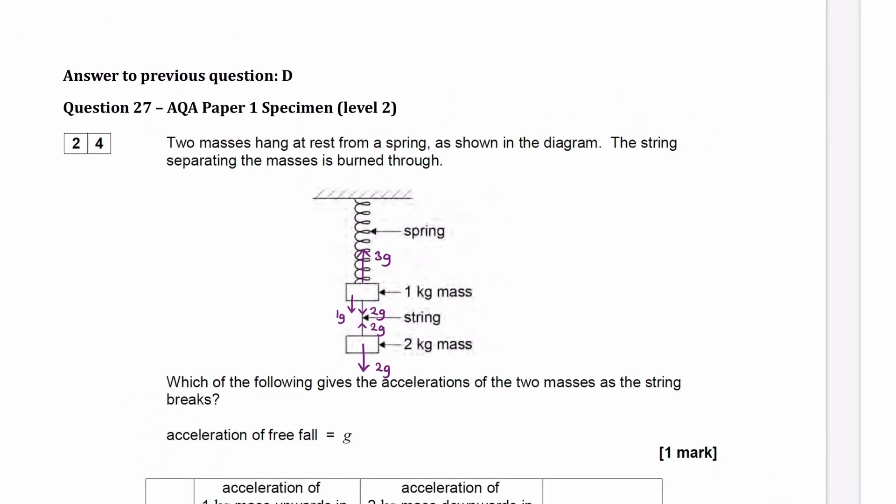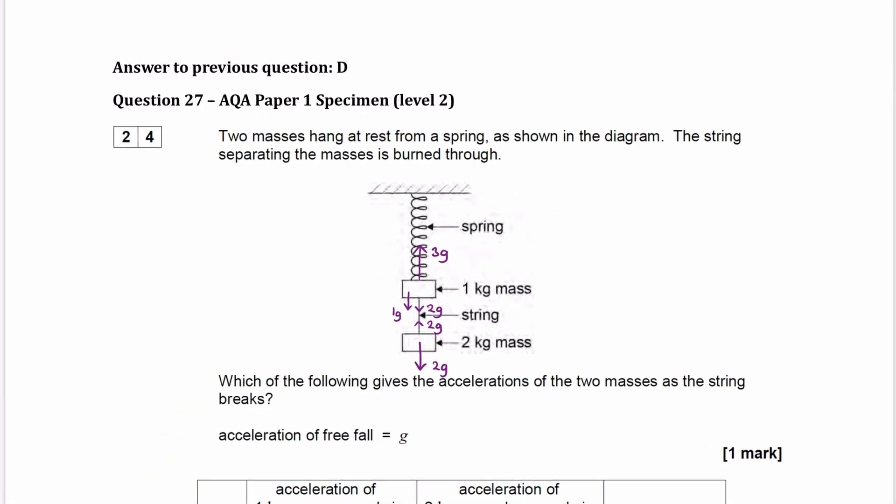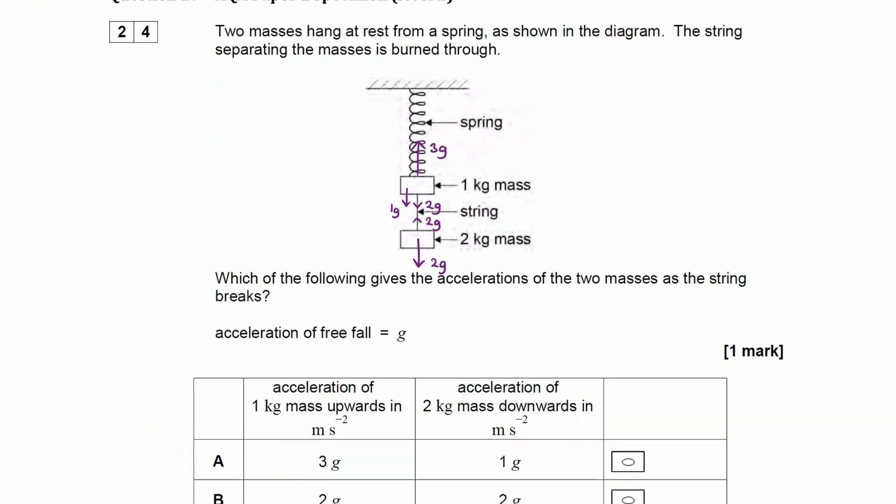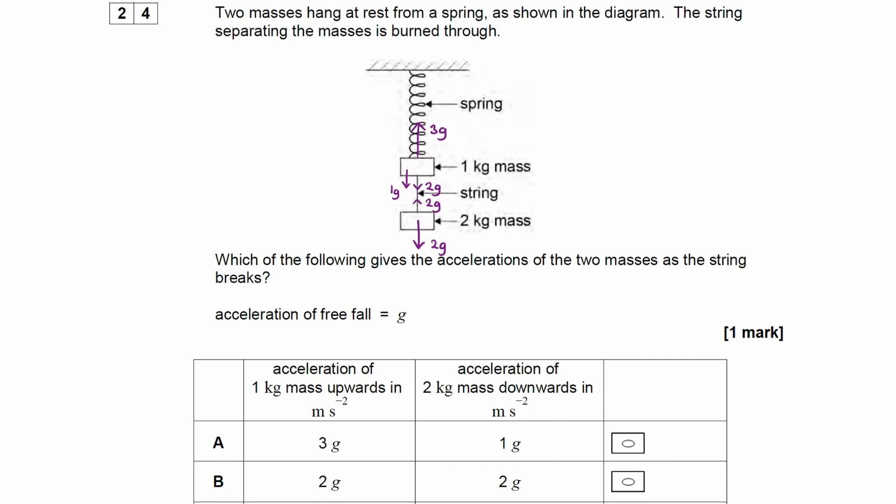The question is asking us to figure out the acceleration of the two masses as the string breaks. So for the 2kg mass, after the string breaks, the only force acting on it would be its own weight. So that would be 2g downwards. When a mass experiences only its weight force, then its acceleration would be 9.81 downwards. It's in freefall.